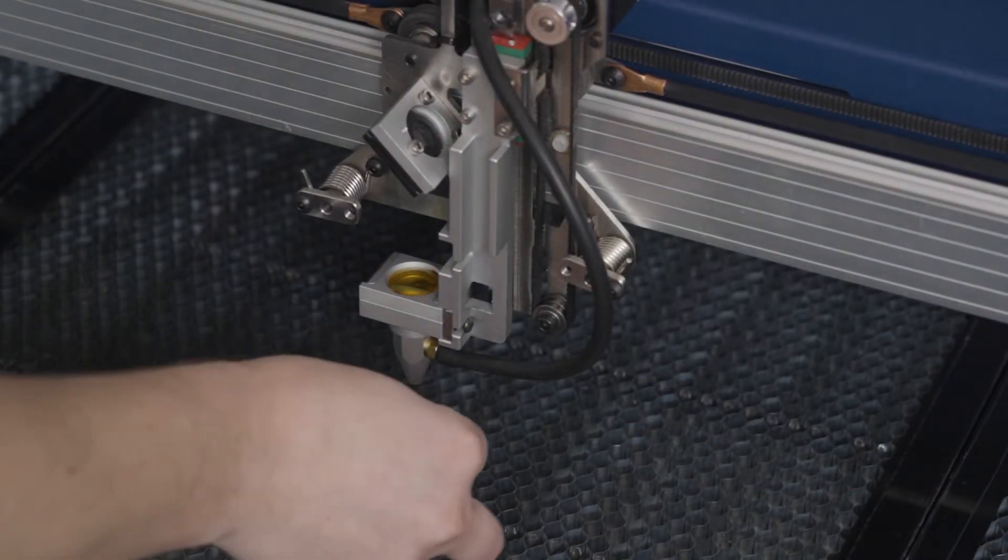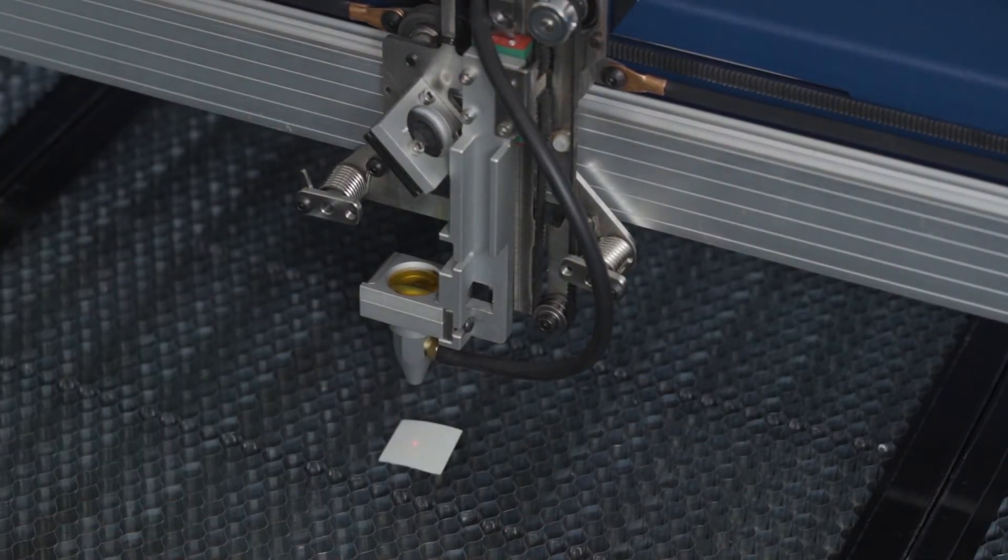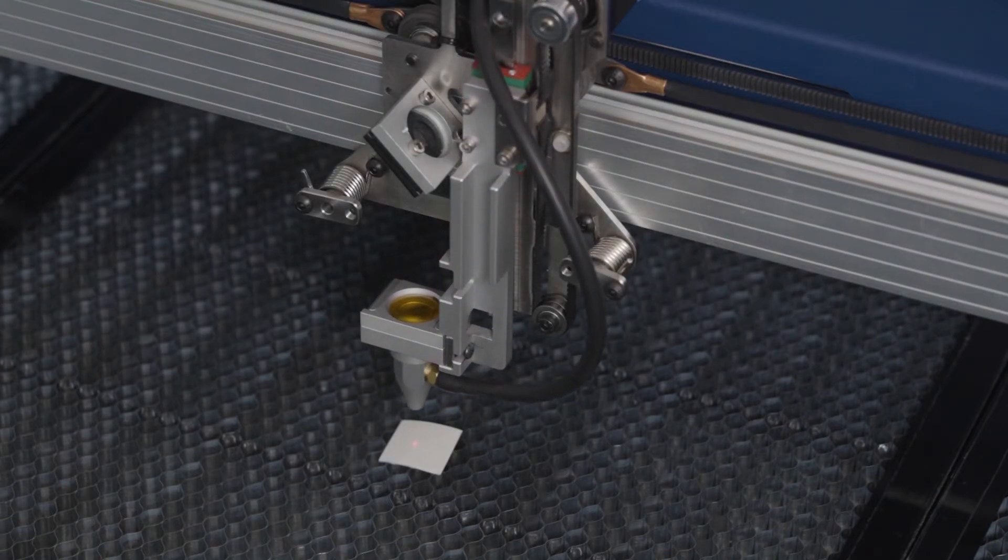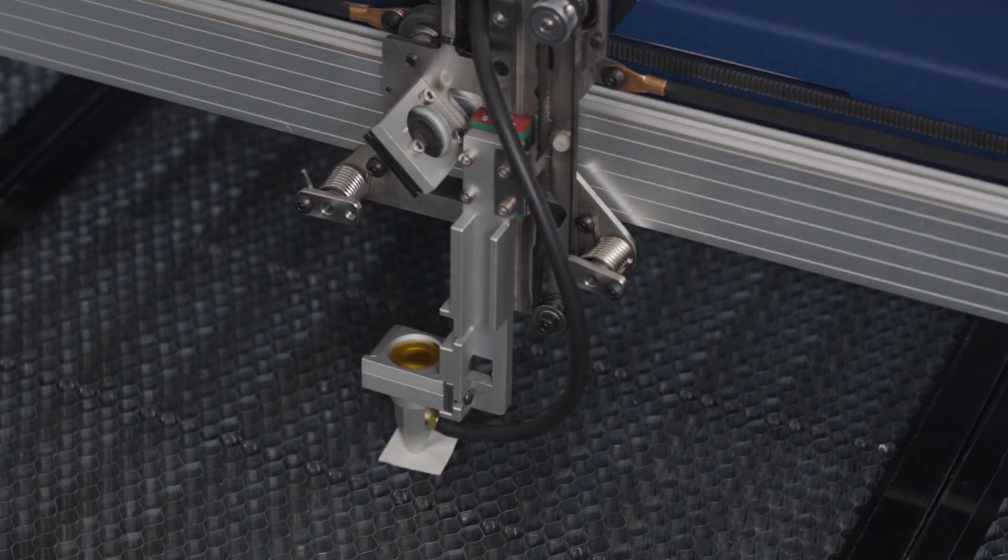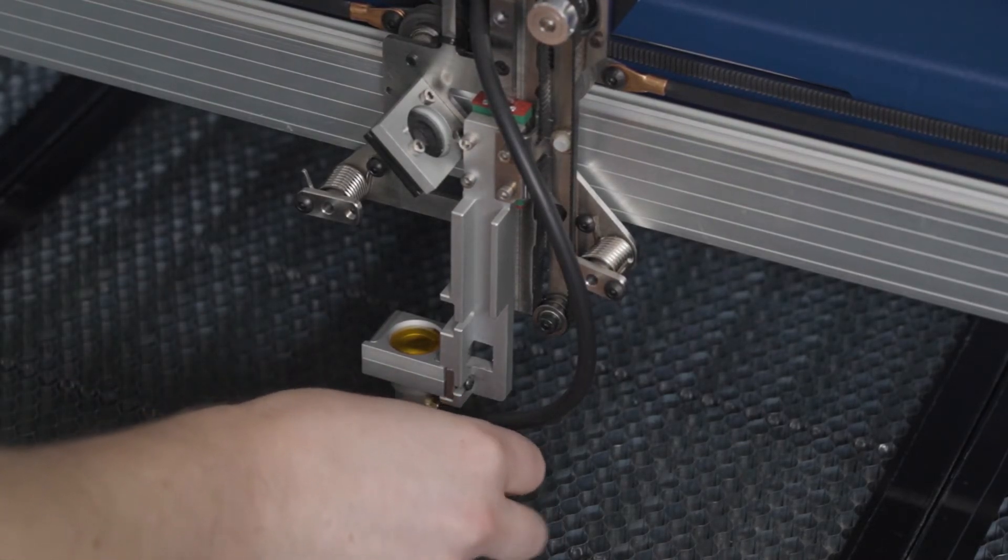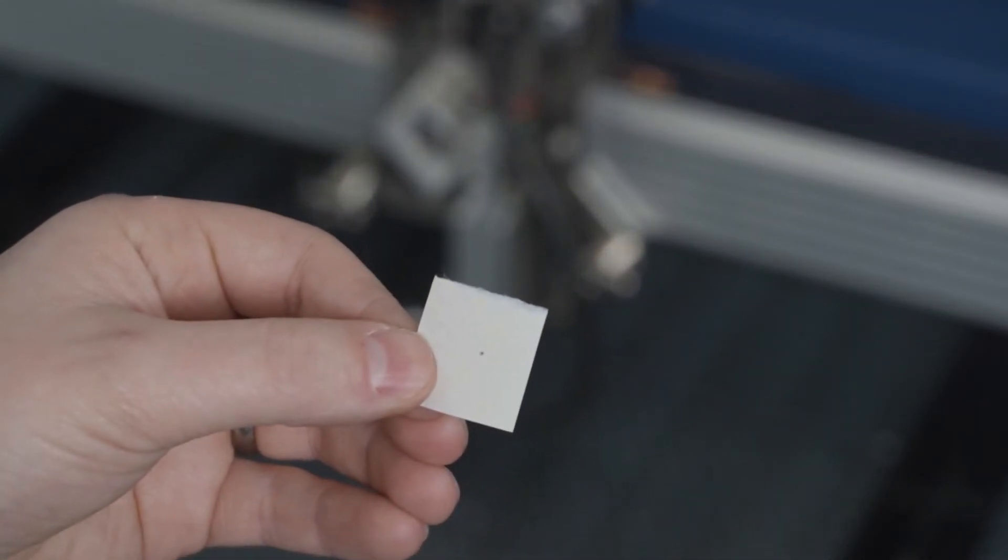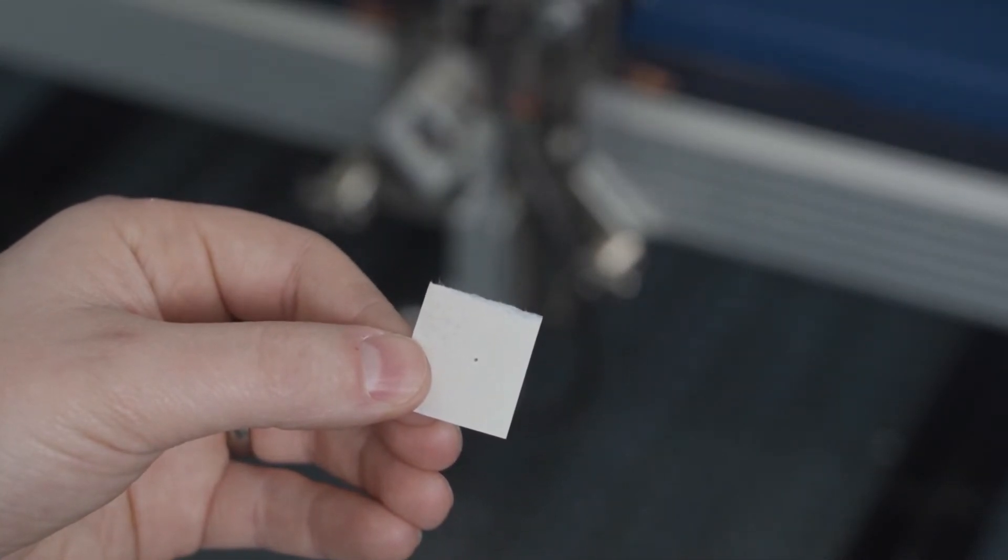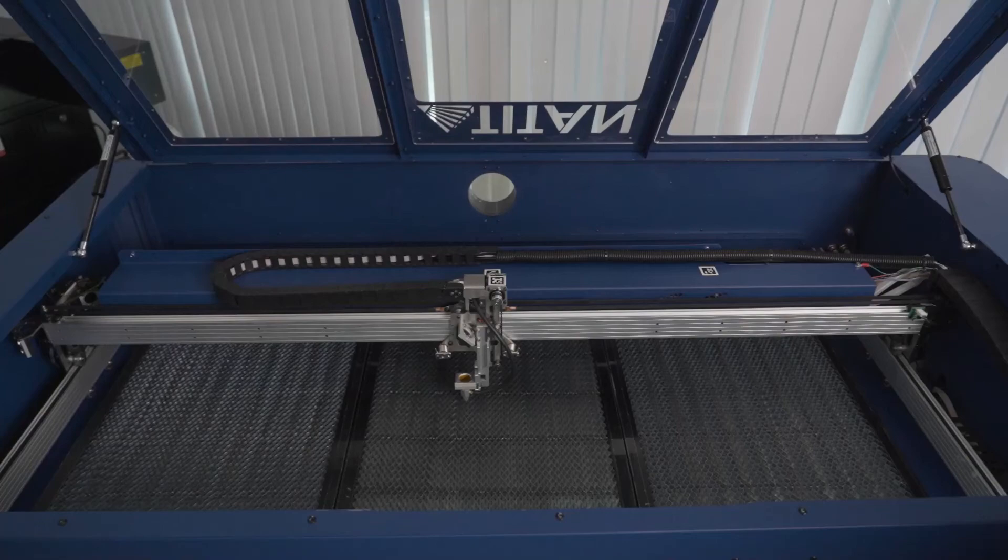Put your piece of thermal paper under the lens and then autofocus and do a test fire. Your result should be a sharp, precision black point. Now, to test the alignment, we're going to do the same thing in each corner of the machine.